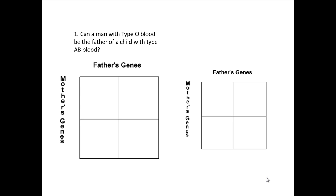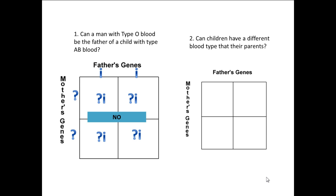We can look at a Punnett square for blood type to answer interesting questions. Can a man with type O blood be the father of a child with type AB blood? If we put in the type O blood genotype, none of the combinations could be AB — this is the stuff of bad daytime TV where blood tests determine who could be the father. Can children have a different blood type than their parents? If the father has type A blood and the mother has type B blood, the zygote combinations — AB, BI, AI, and II — show that the kids have an equal probability of having all the different blood types. You could have a father with type A, a mother with type B, and a child with AB or type O.